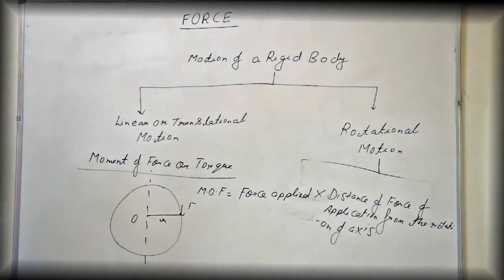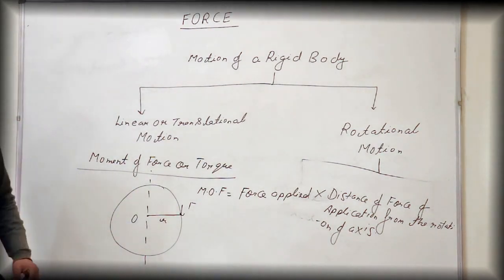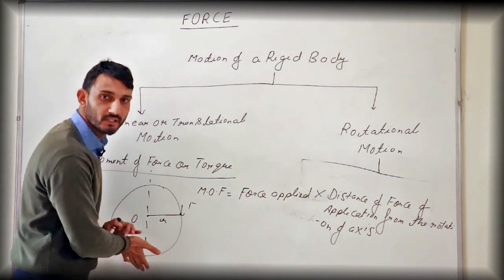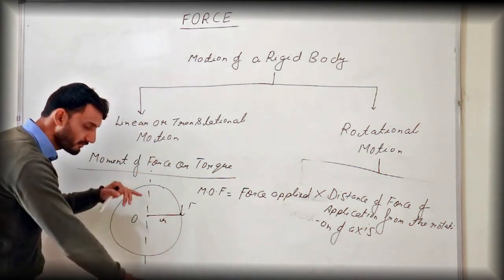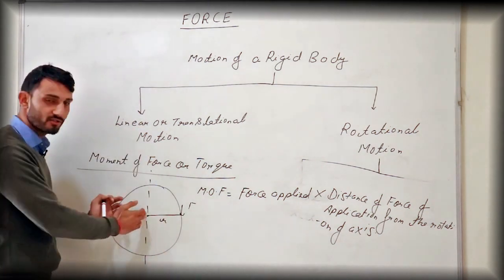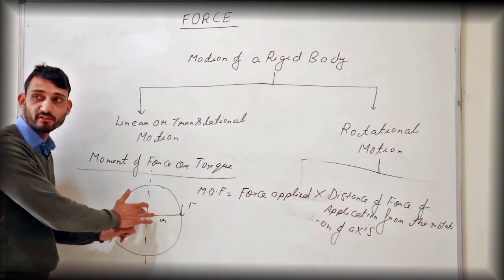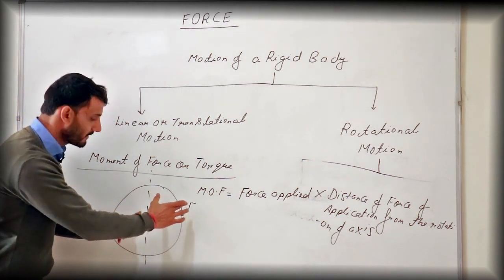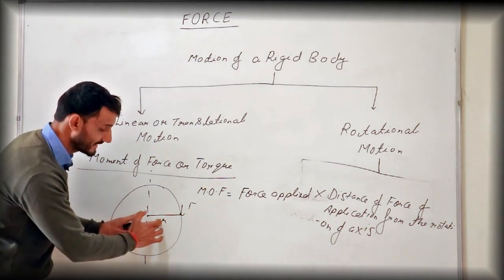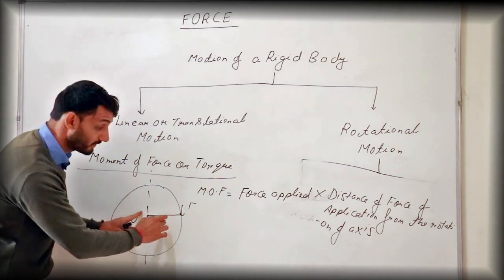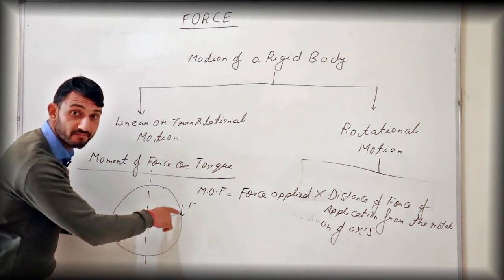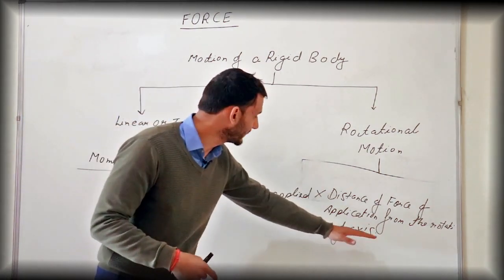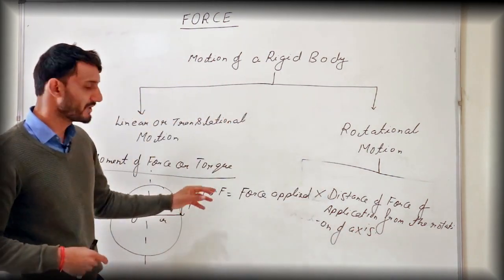To calculate the moment of force, we need a force applied on a rigid body rotating along the axis of rotation, and we need to know the distance of the point where the force is applied from the axis. So r is that distance. By multiplying these two factors — force and r — you will get the moment of force.